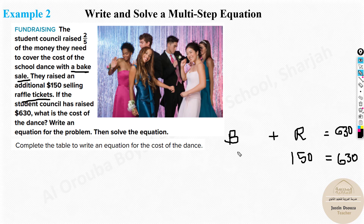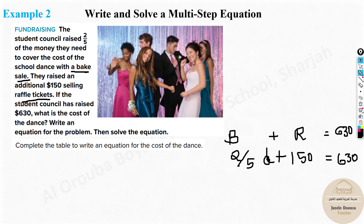The bake sale was two-fifths of the dance cost — let's call it d. This is the important unknown we need to find. So the equation is: (2/5)d + 150 = 630. The dance cost d is unknown, and that is what we are solving for. This is the equation; now we solve this multi-step equation.